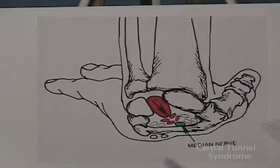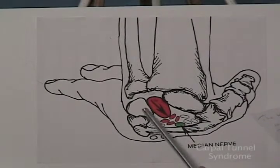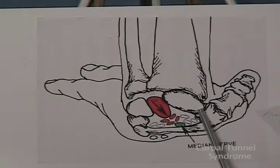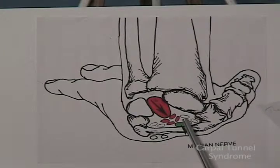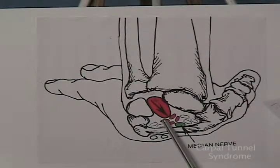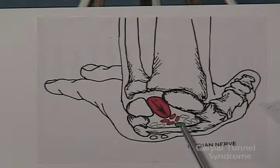In order to better understand why carpal tunnel syndrome occurs, it is helpful to be familiar with the anatomy of the wrist and hand. The wrist and hand are the most active and complex part of the upper extremity. The wrist alone contains 10 bones arranged in the shape of an arch or tunnel. The distal radius enlarges to form the seat of the carpal tunnel. Within the carpal tunnel is the median nerve and the nine tendons that flex the wrist. This is a crowded tunnel.